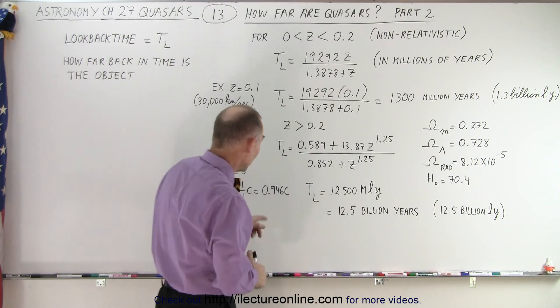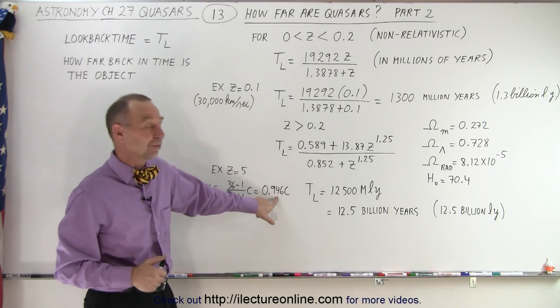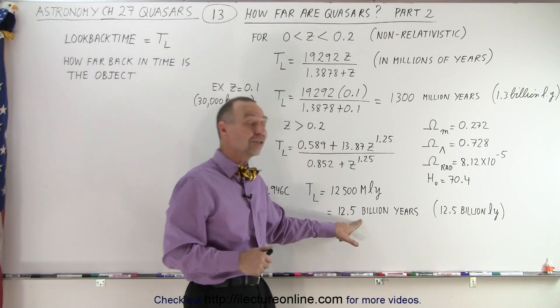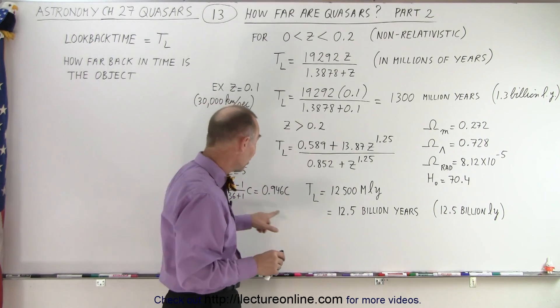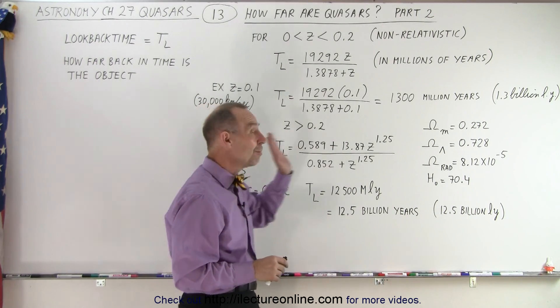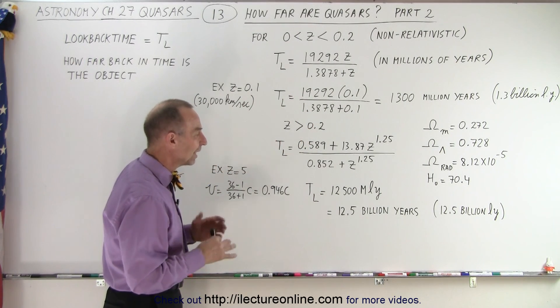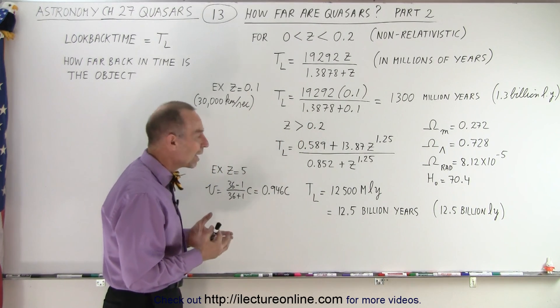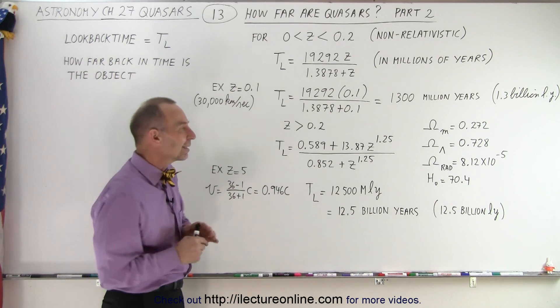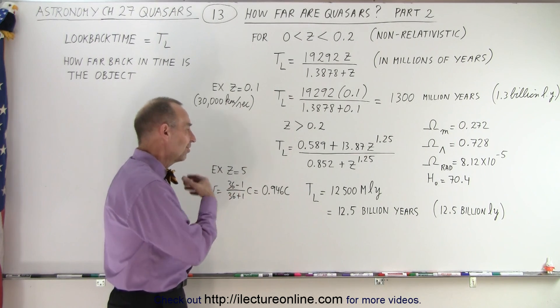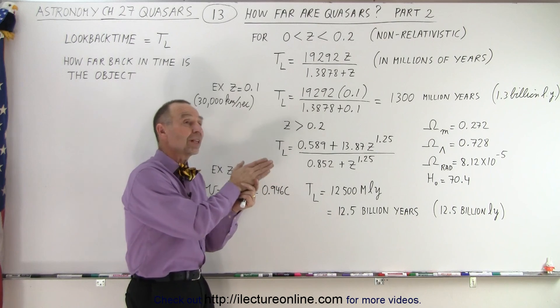Of course, since at that point, the object is moving pretty close to the speed of light, and the light has been on its way for 12 and a half billion years, you can imagine that it is now much farther away than it was when the light left us back then. So that is the way we calculate the look-back time, which gives us a distance to where the object was when the light left,